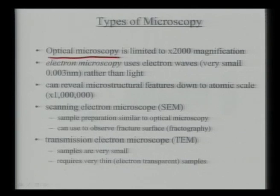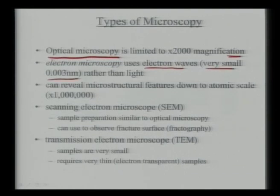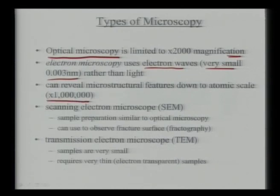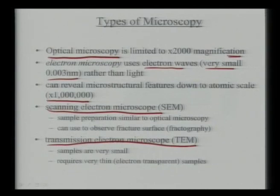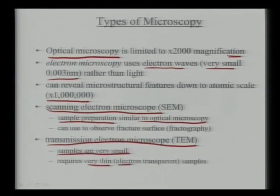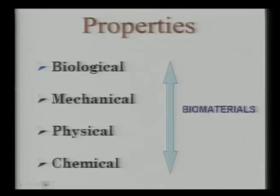What microscopy techniques are used in material science? The first is optical microscopy, which uses simple light — but because of the large wavelength of light, magnification is limited. Then comes electron microscopy, which uses electron waves with a very small wavelength of the order of 0.003 nanometers depending on accelerating voltage. Scanning electron microscope (SEM) and transmission electron microscope (TEM) can reveal structure at much higher magnifications — up to one lakh or more. SEM sample preparation is straightforward using bulk samples; for TEM, samples must be very thin and electron-transparent.